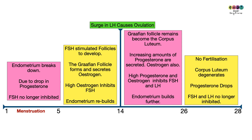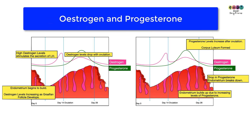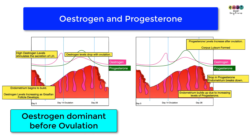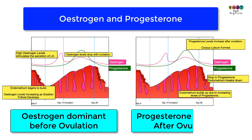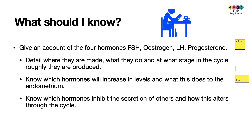When progesterone levels drop, the endometrium is no longer maintained. Low progesterone also means that FSH and LH will no longer be inhibited, so the cycle can begin again. Two hormones present throughout the entire cycle are estrogen and progesterone. Estrogen is dominant before ovulation, and progesterone is dominant after ovulation.